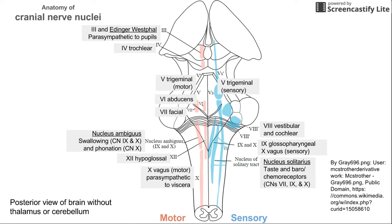Lastly, there is another nucleus specific for the vagus nerve, and this is for the motor innervation to the viscera — mostly a parasympathetic process. Think of it as rest and digest: the vagus nerve innervating your gut and other internal organs in the body cavities, with those nerves synapsing here. That's it for the cranial nerve nuclei — I hope this was a helpful overview of their location in the brainstem.